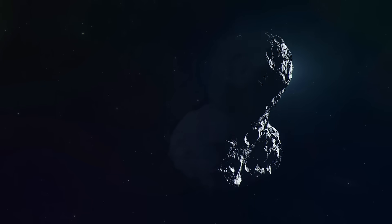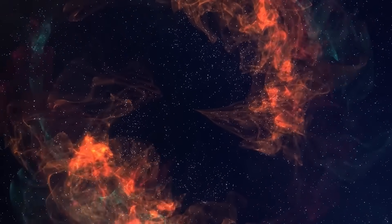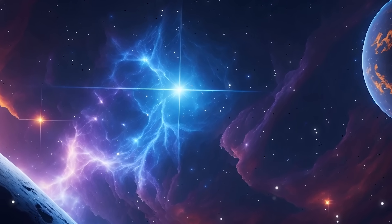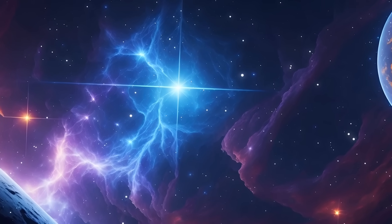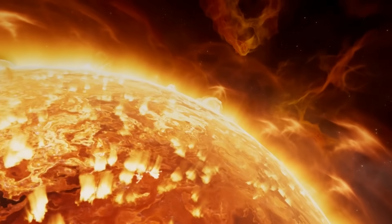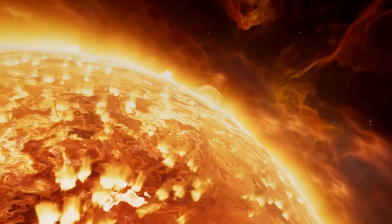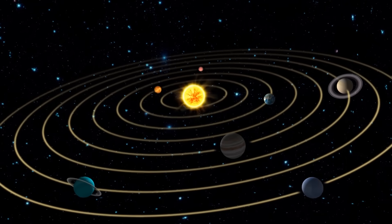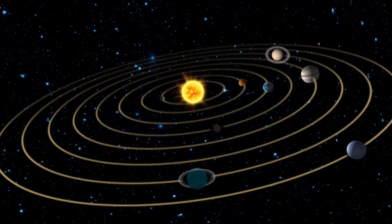Yet 3I Atlas is no ordinary comet. It carries material forged in an alien environment, its ices, metals, and carbon compounds born from a star system entirely different from our own. As it descends into the sun's corona, these materials will be exposed to temperatures exceeding a million degrees Celsius, potentially triggering emissions unlike anything previously seen in solar-comet interaction.